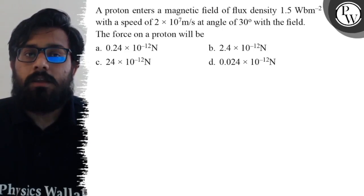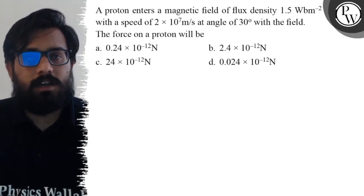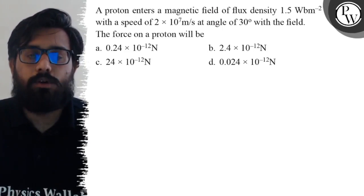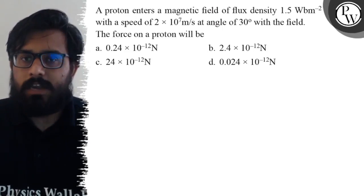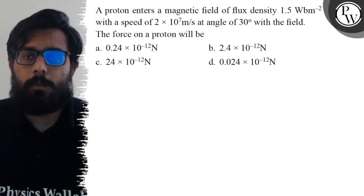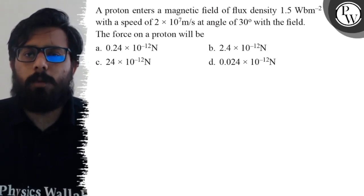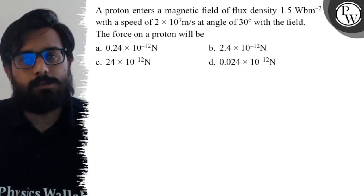The force on a proton will be: first option is 0.24 × 10^-12 Newton, second option is 2.4 × 10^-12 Newton, third option is 24 × 10^-12 Newton, and fourth option is 0.024 × 10^-12 Newton.